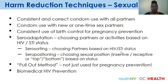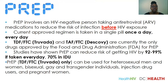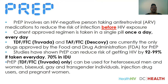We also have biomedical HIV prevention: treatment as prevention, PrEP, and PEP. PrEP — pre-exposure prophylaxis — involves an HIV-negative person taking antiretroviral medications, specifically Truvada or Descovy, the only two drugs currently FDA-approved for PrEP, to reduce their risk of HIV exposure. This pill is taken once a day, every day, consistently, and is known to reduce the risk of transmitting HIV by 92 to 99% for those engaging in sexual activity, and 70% for those engaging in injection drug use.